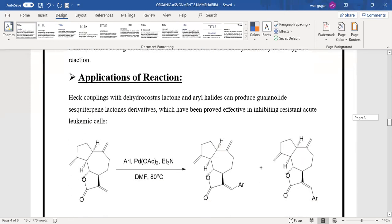So here we see some applications of these reactions in the industry. Heck couplings with dehydrocostus lactone and aryl-halides can produce germacranolides, sesquiterpene lactones, lactone derivatives which have been proved effective in inhibiting resistant acute leukemic cells.